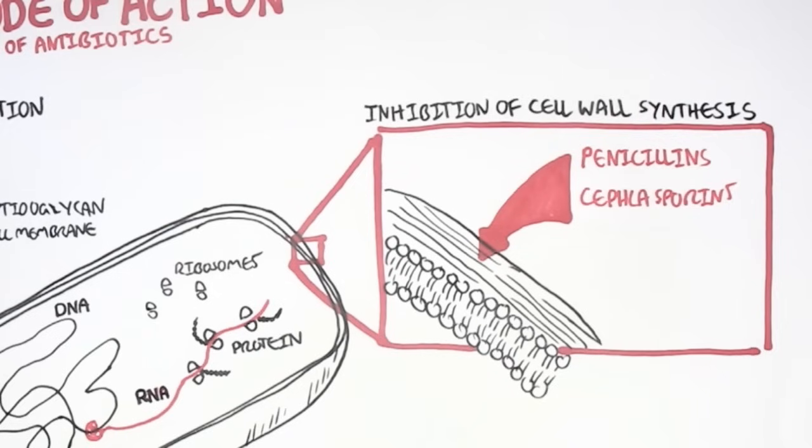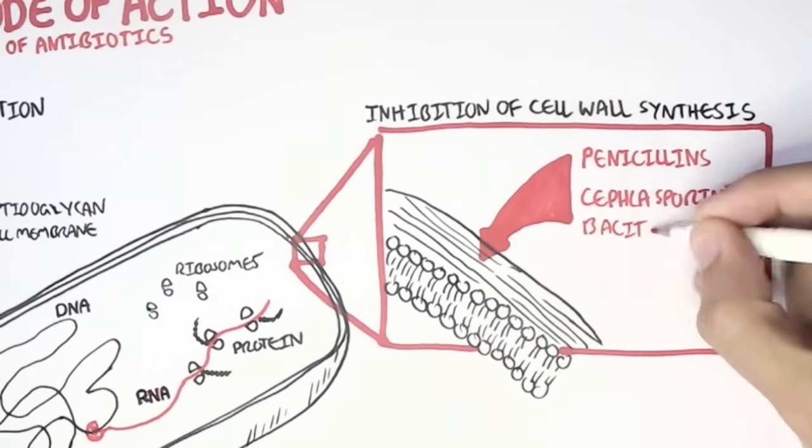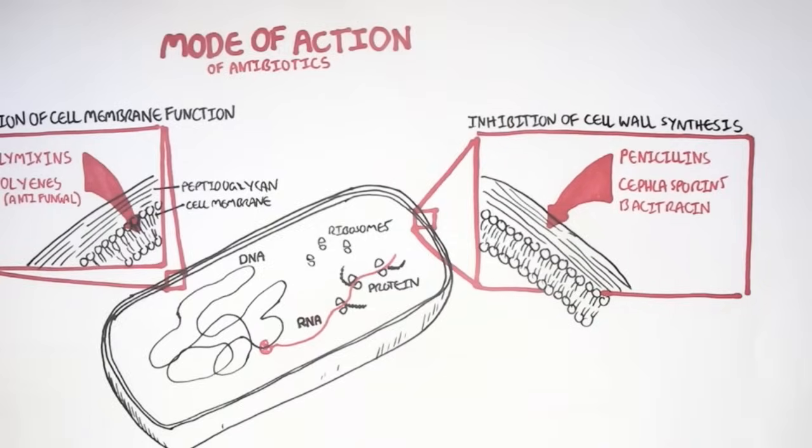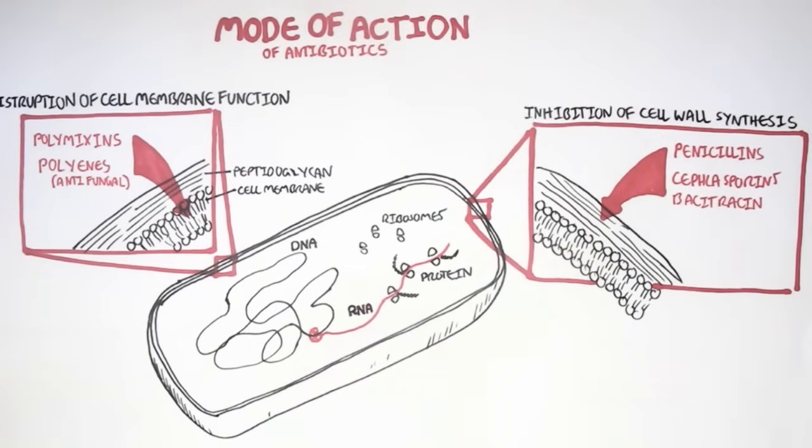Penicillin and cephalosporin are beta-lactams. Then you have bacitracin and other glycopeptides that prevent the synthesis of cell walls as well. Antibiotics that disrupt the cell wall is pretty extensive, and hopefully I will make a video on that. Cell walls are important to bacteria. Disrupting the cell wall or preventing cell wall synthesis will result in cell death.